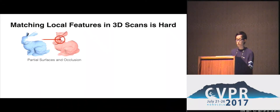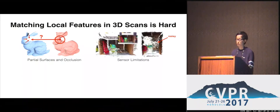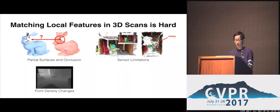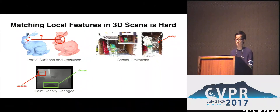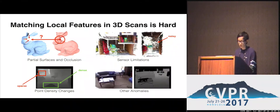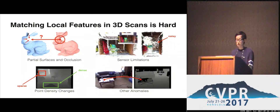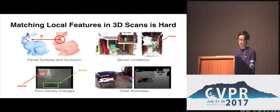However, matching local features in real-world 3D scans still remains a hard problem for several reasons. First, surfaces captured from 3D scanners are always partial and incomplete due to camera viewpoint differences and occlusions. Second, sensor limitations make 3D scans very noisy with different noise patterns between sensors. Third, there are point density changes — a table scanned closer to a camera will have a denser point cloud than one farther away. Finally, real-world scans are full of anomalies, such as missing depth data on slightly reflective surfaces like the top of a coffee table.